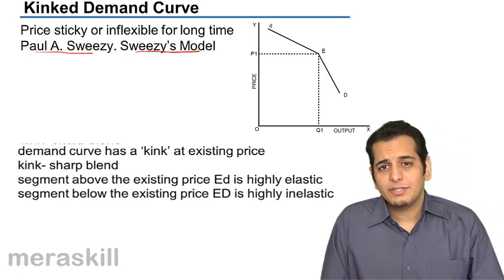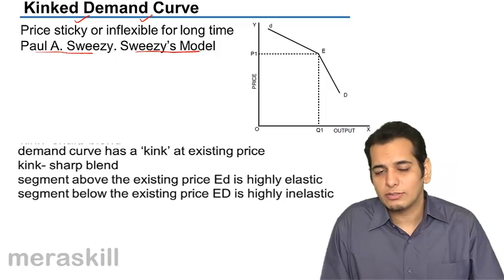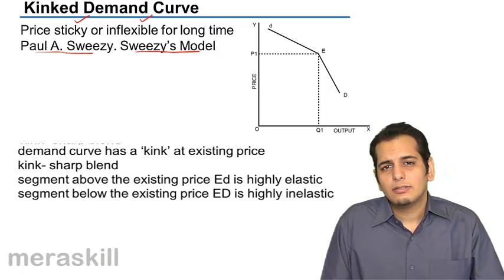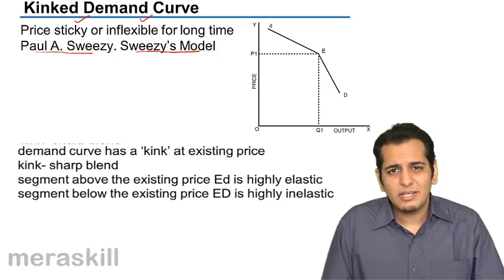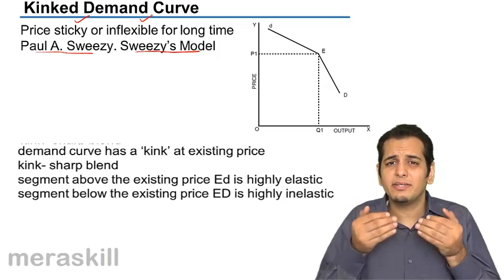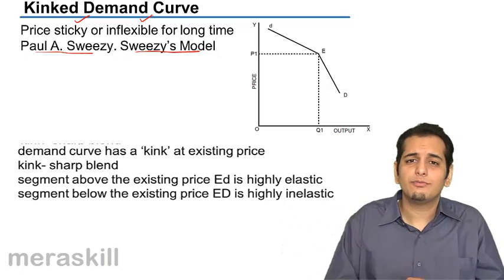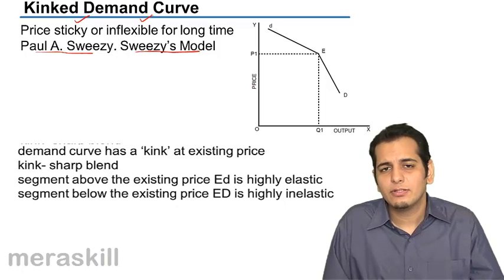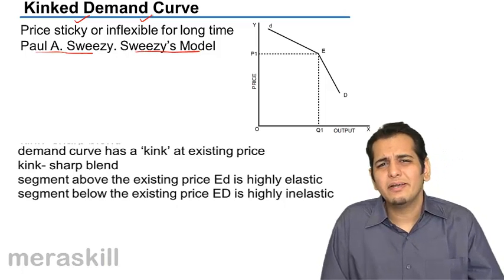He said the price in an oligopoly market remains sticky or inflexible for a long time. This means that the price in an oligopolistic market does not change much — it remains inflexible. The sellers would not like to change the prices; they rather stop themselves from changing the price. It's because they know if they change the price, the other sellers will also follow them. So in effect, the change in price will only be negated by the change in price by other sellers, making it a futile exercise.